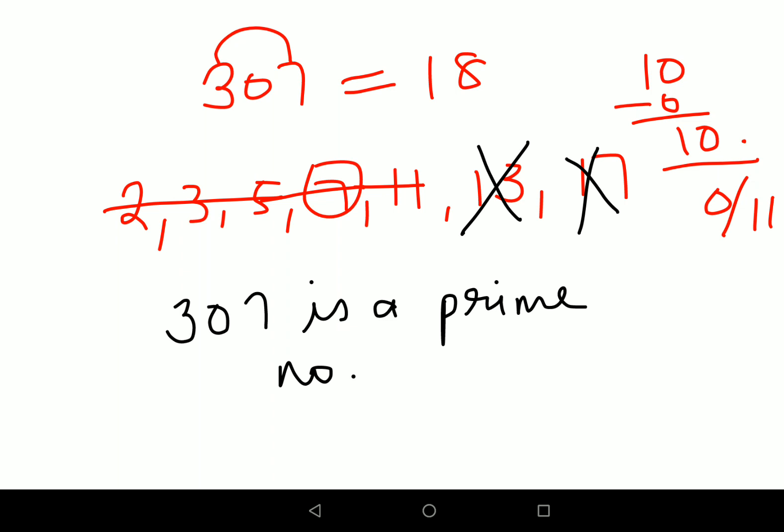Now let's very quickly look at one more example and then I'll just wind it off. Here again we have 509. 509 is very close to 23 square, so you'll write down all the prime numbers up to 23.